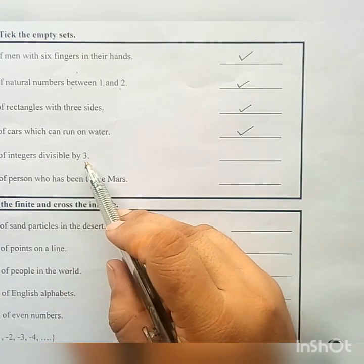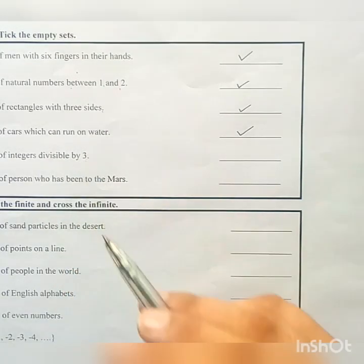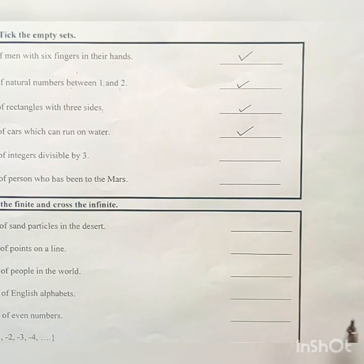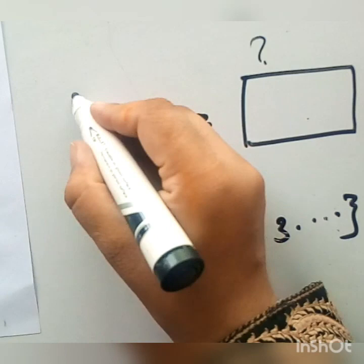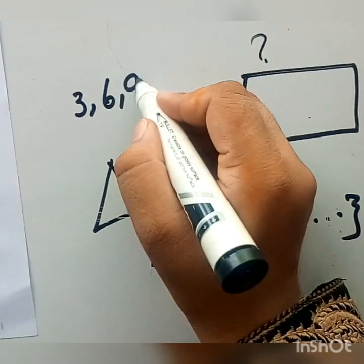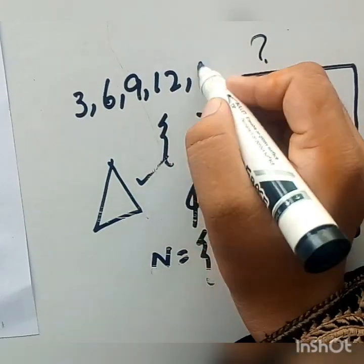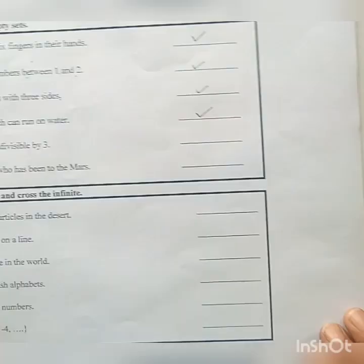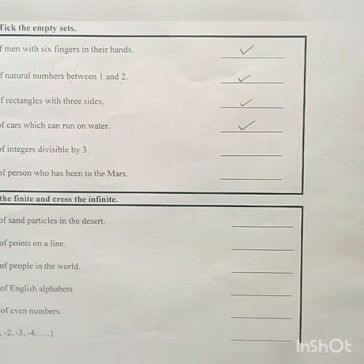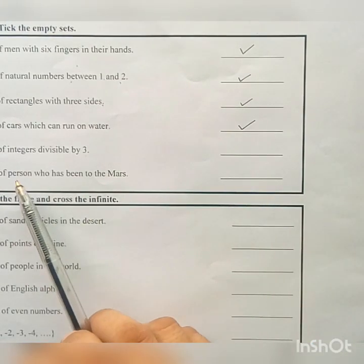Set of integers divisible by 3. Students, there are many integers that are divisible by 3. For example, 3 itself is divisible by 3, 6, 9, 12, 15, up to so on. These all can be divisible by 3. So it is not an empty set.